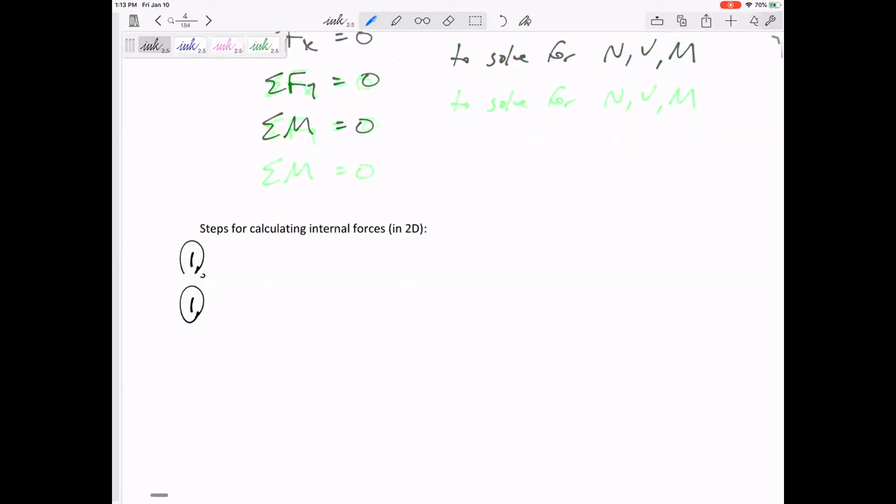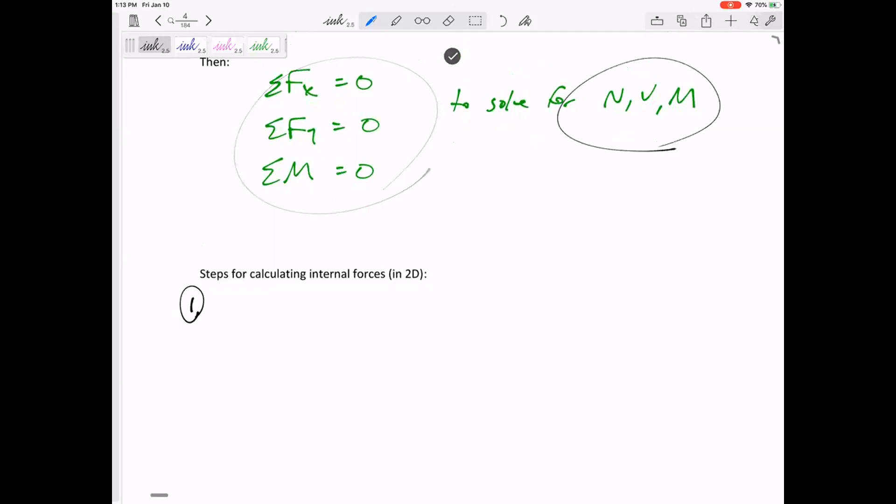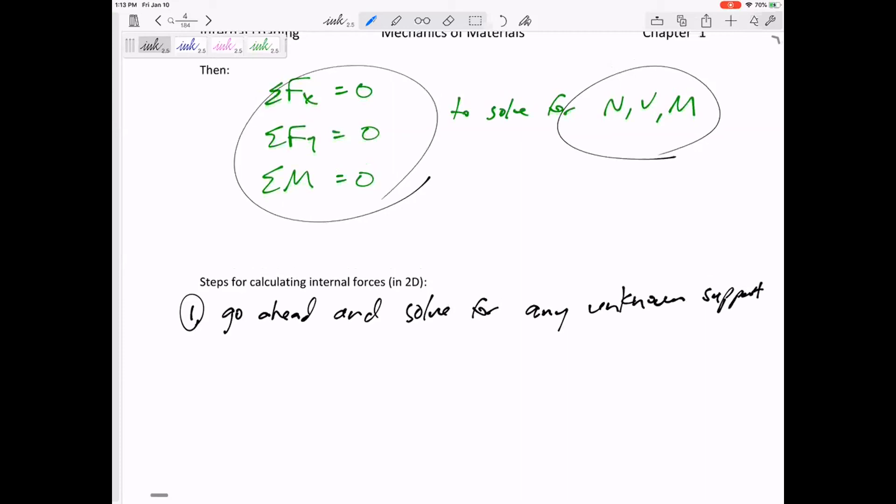In order to solve for N, V, and M with three equations, you've got to know everything else. So before you cut it, solve for any unknown supports and reactions. You can be smart about it—if you're only keeping this half, you don't have to solve for the pin on the other half. Solve for everything on your half of the beam that you're going to keep.